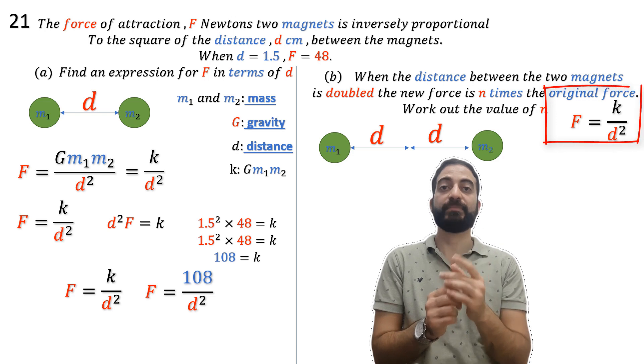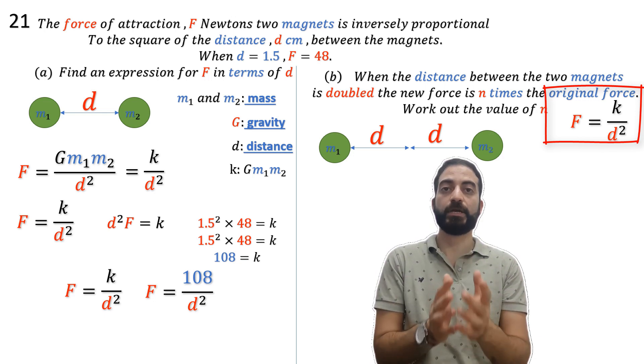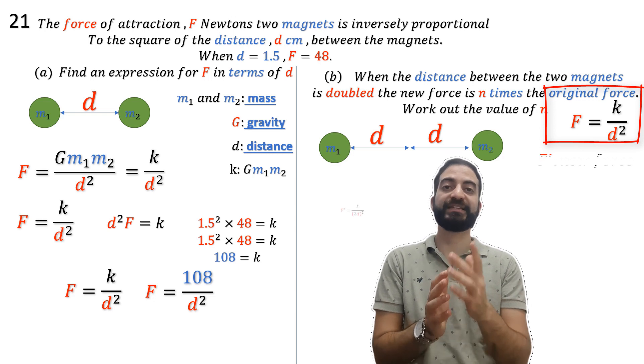This is the original force. When the distance between the two magnets is doubled, we have a new force. In place of d, we must substitute 2d.